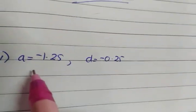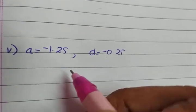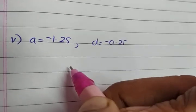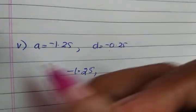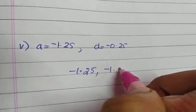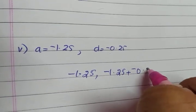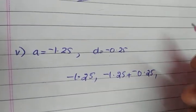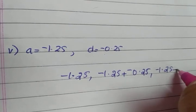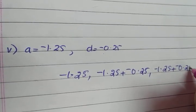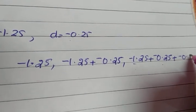For the fifth part, a is given as minus 1.25 and d is given as minus 0.25. So the first term is minus 1.25. To get the second term, we add minus 1.25 plus minus 0.25. To get the third term, we again take minus 1.25 plus minus 0.25, which is the second term, plus minus 0.25.